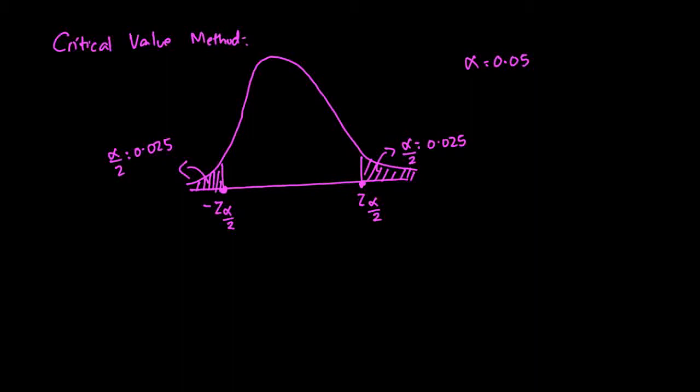If you want to use a calculator, this is nothing but inverse norm of the area below negative z alpha over 2. So the area below is 0.025, and you'd find this number to be approximately negative 1.96. Using a similar approach, on the right tail, the area below the point z alpha over 2 is 1 minus 0.025, which would give me positive 1.96. So the critical values that help us in making the decision are negative 1.96 and positive 1.96.